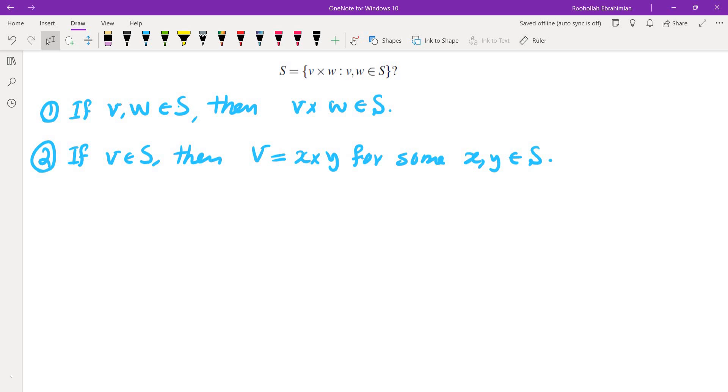So the first thing, which is not difficult to figure out, is to replace V and W with the same vector and see what you get. Then you can swap them and repeat this process. So let me write it down. So let V be in S, then V cross V is in S, so that means the zero vector is in S.